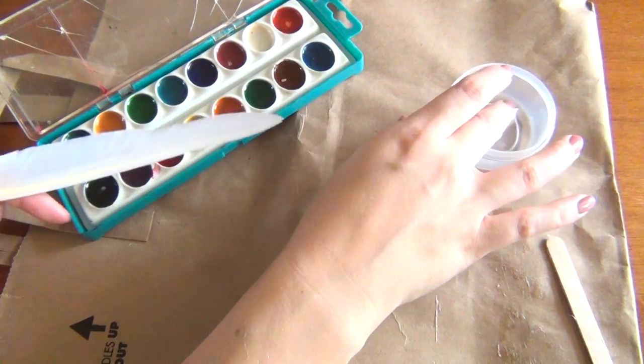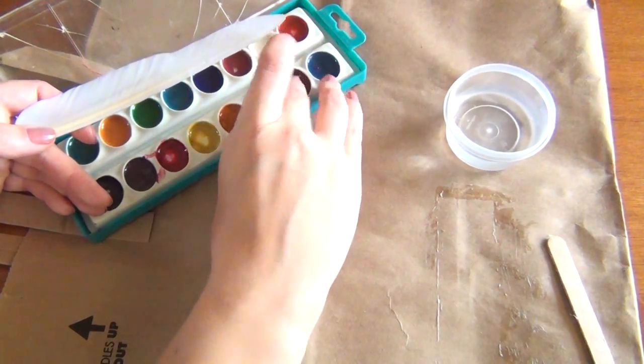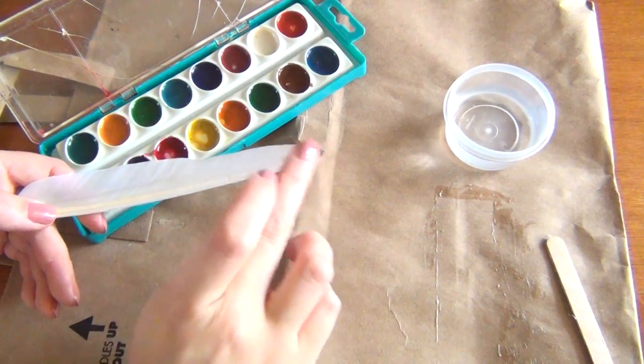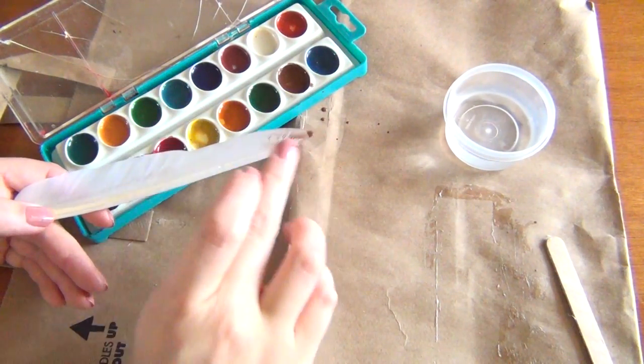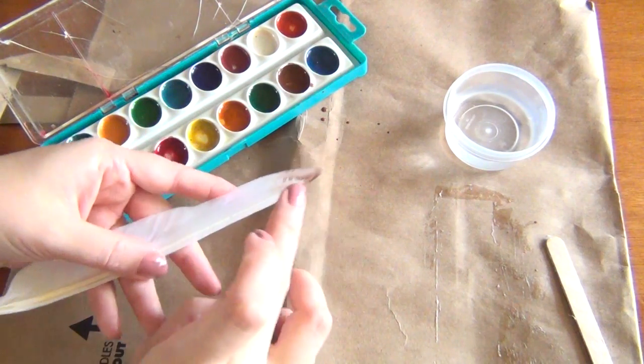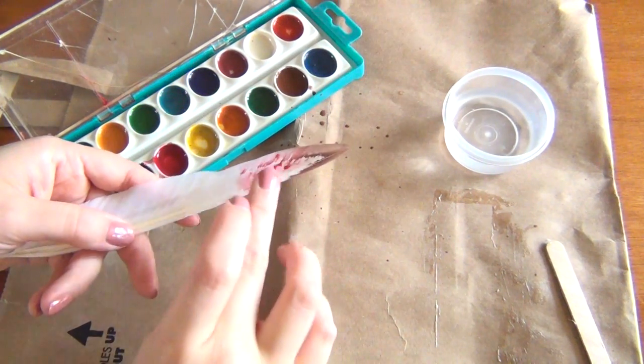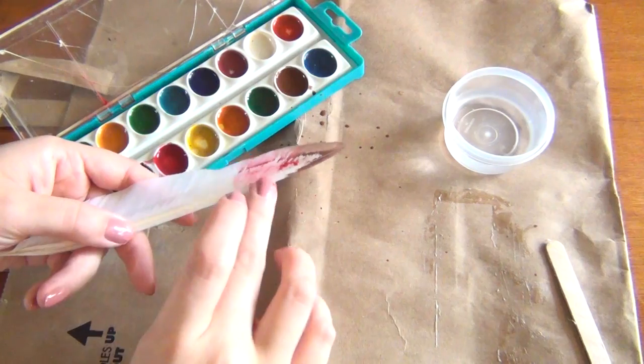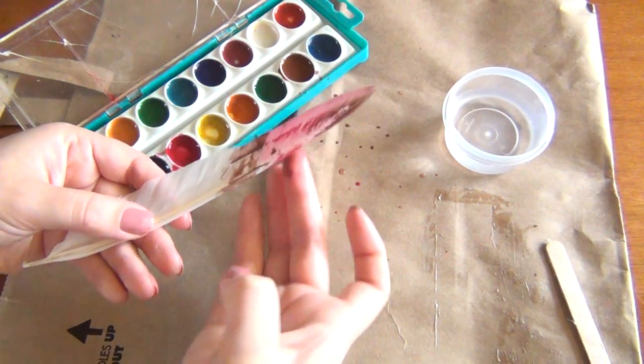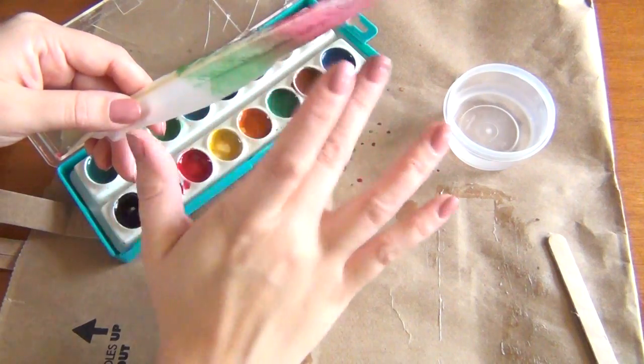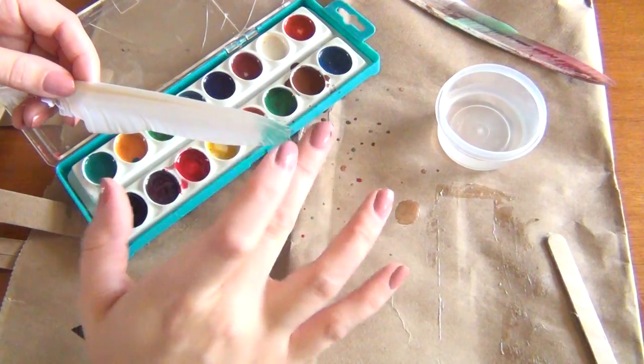Start by putting a little bit of water on your fingertip and then pick up your paint with that water and start brushing it gently onto the feather. I'm actually doing a bit of a gradient pattern to match the gradient and the colors in my ribbons but you can do any sort of color palette you want or even leave these as plain white feathers. Just be very gentle and make sure you get it on both sides of the feathers and be creative and have fun with it.